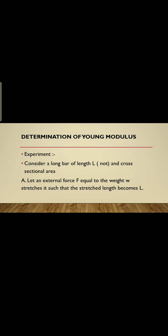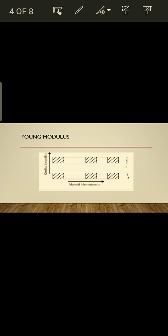Let the external force F, equal to the weight W, stretch the bar such that the stretched length becomes L. If we stretch the long bar of original length L0, then its stretched length becomes L. Here you can see the diagram of the long bar — original length L0, cross-sectional area A — and when force F is applied, the stretch length becomes L.